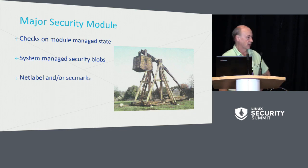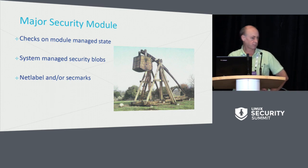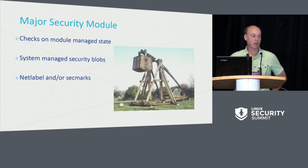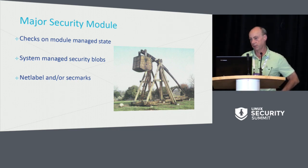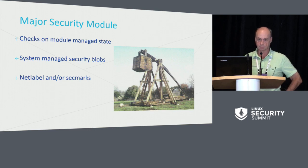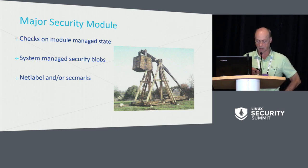A major security module will actually maintain state about the system. It'll maintain its own attributes — for example, SELinux will keep a file context on every file and a process context. In order to achieve this, we have a system whereby most of the major kernel data structures have a pointer to what we call a security blob, and each of the major modules can use these security blobs to contain their information. We also have a mechanism called NetLabel which allows you to set CIPSO and Calypso security options on IP packets. And we have a thing called SecMarks, which are used in some of the other networking mechanisms to transfer security information attributes along with packets as they travel within the system.